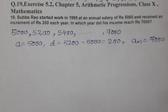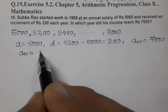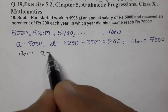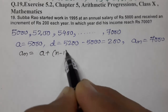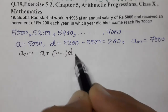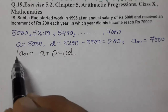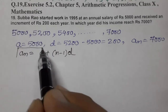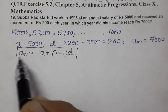Now, we know the nth term of the AP: An equals A plus (N minus 1) into D. This is the nth term of AP. Now, put the values and find out N.